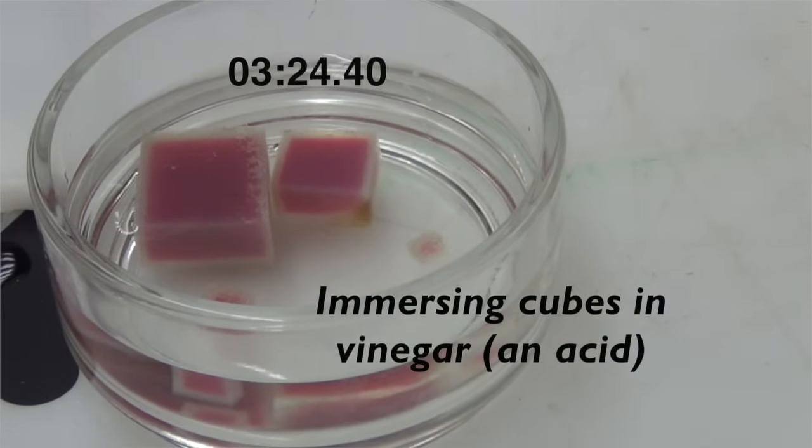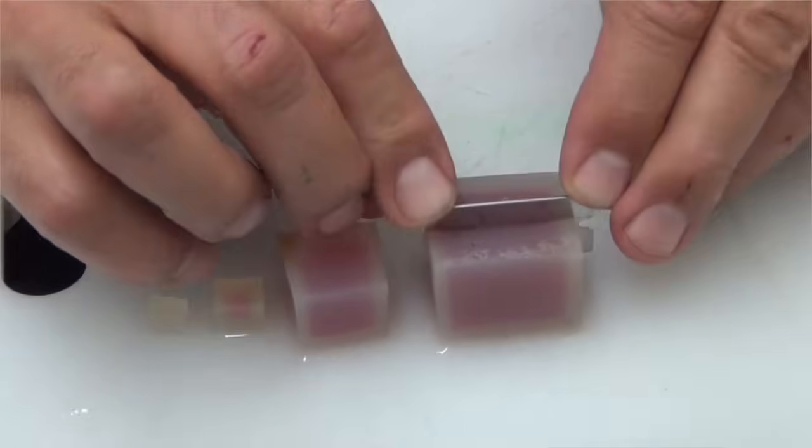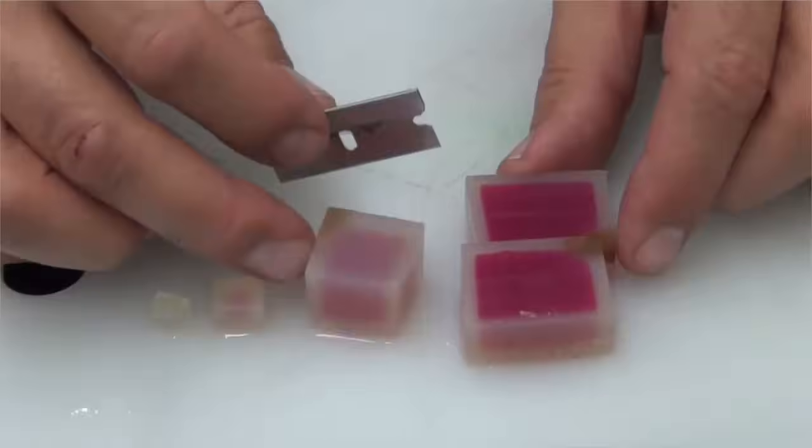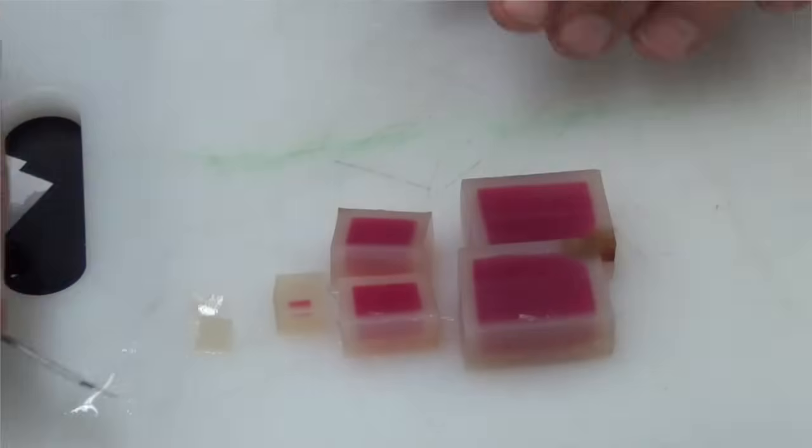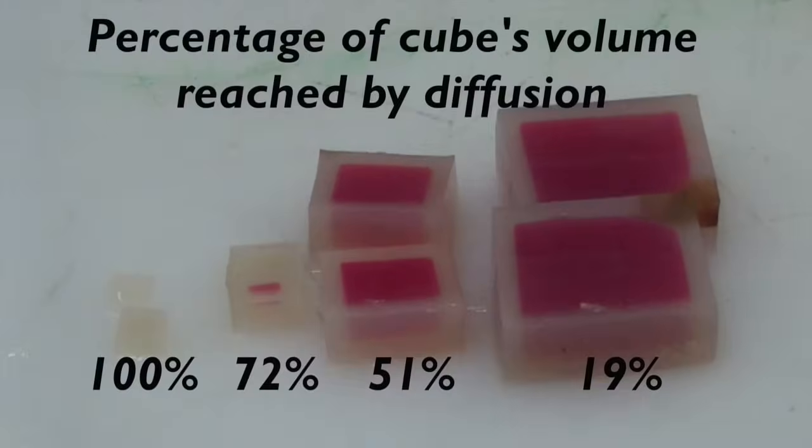In six minutes, the tiny cube has lost its fuchsia color and turned completely white. The other cubes still have some fuchsia inside, and the percentage that's still fuchsia goes up with the size of each cube. In other words, vinegar diffused into 100% of the smallest cube's volume, while it reached only 19% of the largest cube's volume.